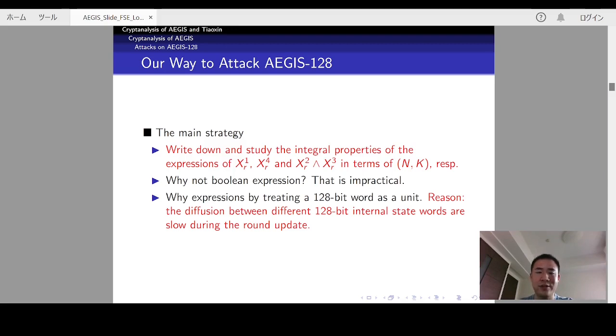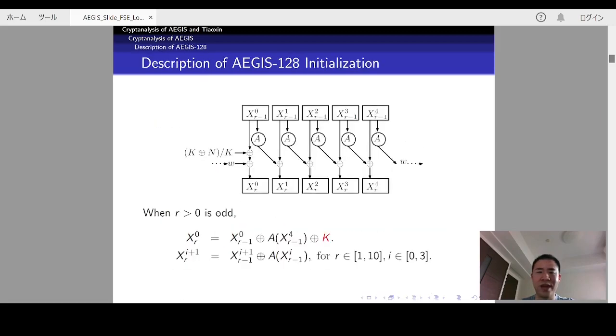Obviously, this is impractical because it is too complex. Considering the nature of the round function, we find it more feasible to write and analyze the expressions by treating a 128-bit word as a unit. This is because the diffusion between different 128-bit blocks is very slow during the round update. So, you can see from this figure, the diffusion between each block is very slow.